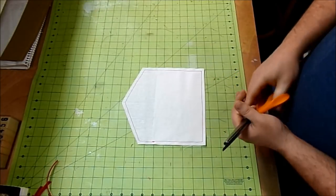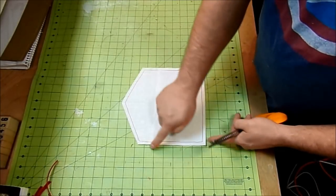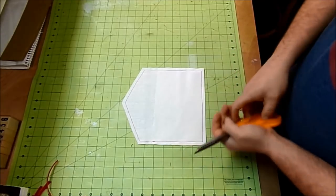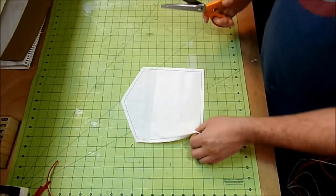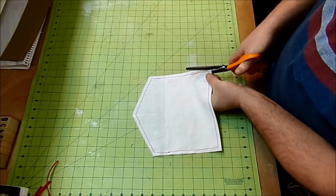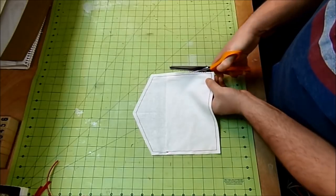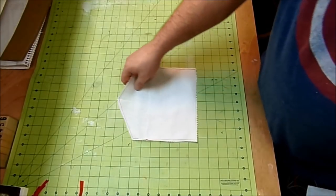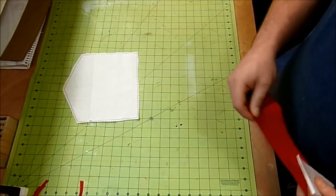So now I'm just gonna take my pinking shears here and pink all around the edges, making sure not to go through your stitches. That'll keep the fabric from fraying, and I also like the rustic look. So now that I have finished pinking around my envelope, I'm just gonna set it off to the side for a minute.